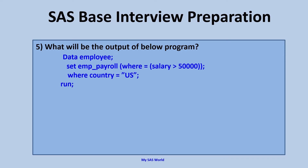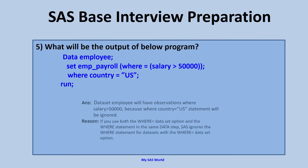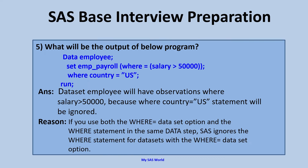What will be the output of the below program? DATA EMPLOYEE; SET EMPLOYEE_PAYROLL (WHERE=(SALARY > 50000)); WHERE COUNTRY = 'US'. This one is again a little tricky because here we are using both a WHERE dataset option and a WHERE statement. The key thing to understand is that WHERE applies to the input buffer. The answer is: the EMPLOYEE dataset will have observations where SALARY > 50,000, because the WHERE statement WHERE COUNTRY = 'US' will be ignored. When we have a WHERE statement and a WHERE dataset option together, the WHERE option takes priority.